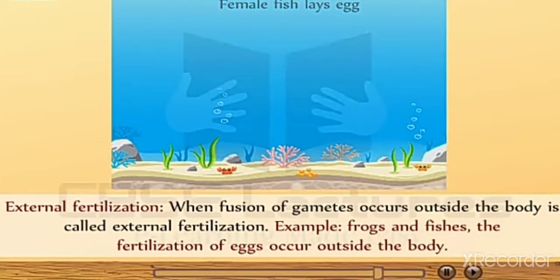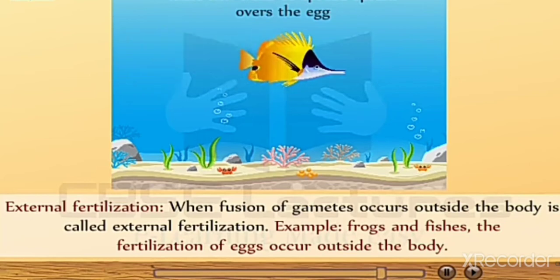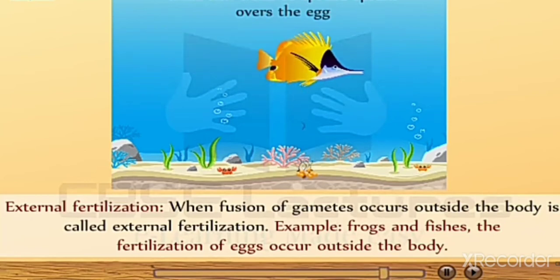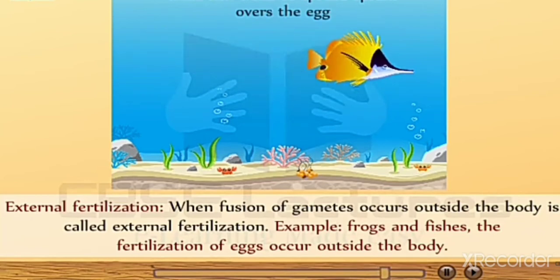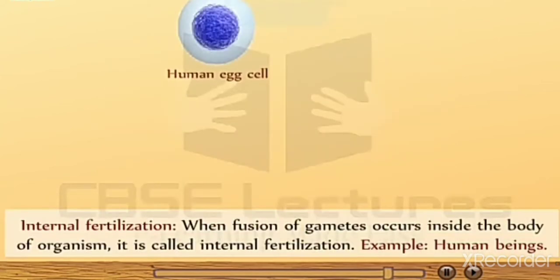When fusion of gametes occurs outside the body, it is called external fertilization. Examples include frogs and fishes, where fertilization of the egg occurs outside the body.